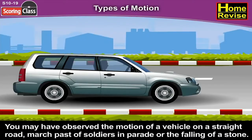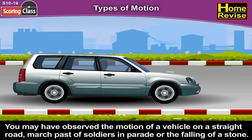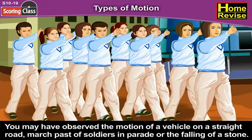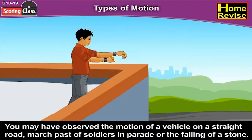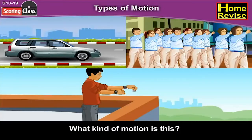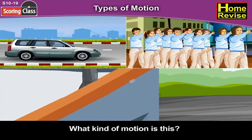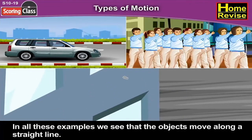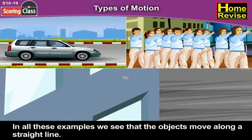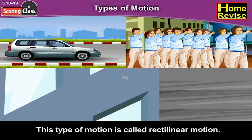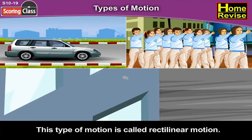Types of Motion. You may have observed the motion of a vehicle on a straight road, march past of soldiers in a parade, or the falling of a stone. In all these examples, we see that the objects move along a straight line. This type of motion is called rectilinear motion.